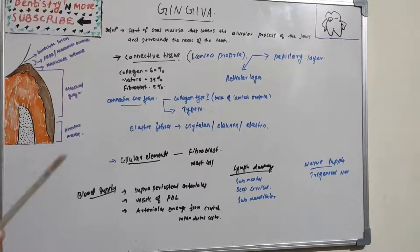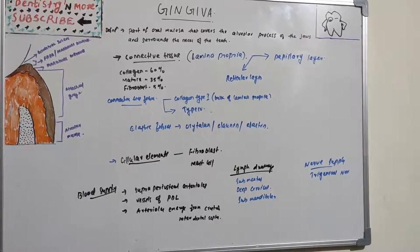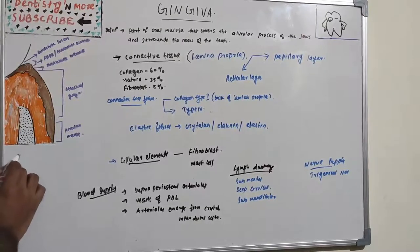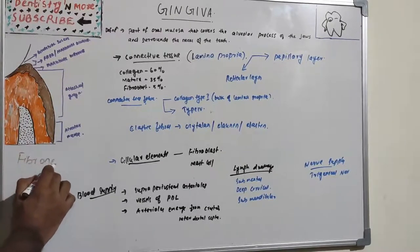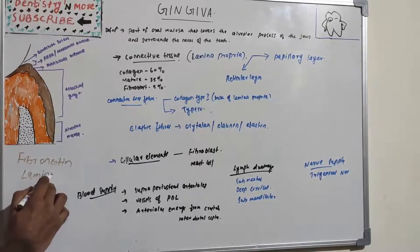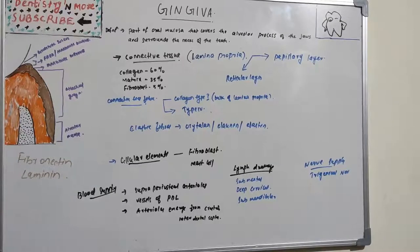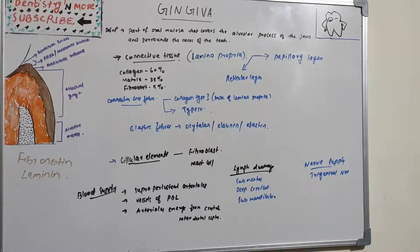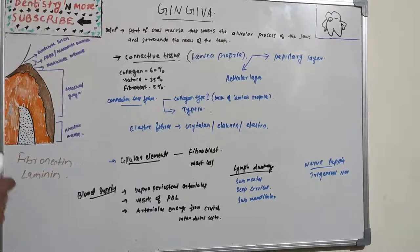Whereas laminin is another glycoprotein which is found in the basal cell lamina and serves to attach it to the epithelial cell. So it is attaching to the epithelial cells.